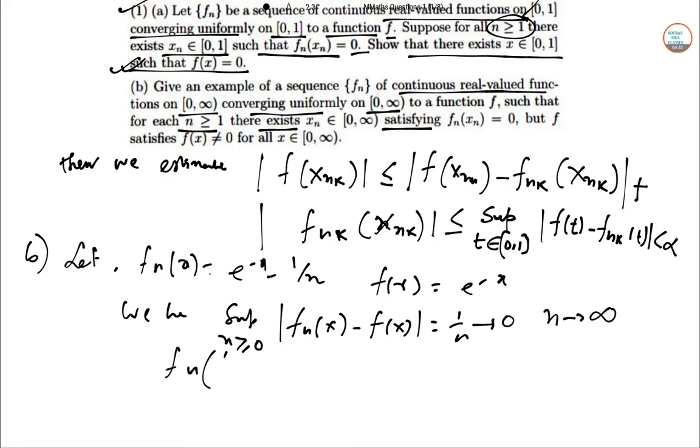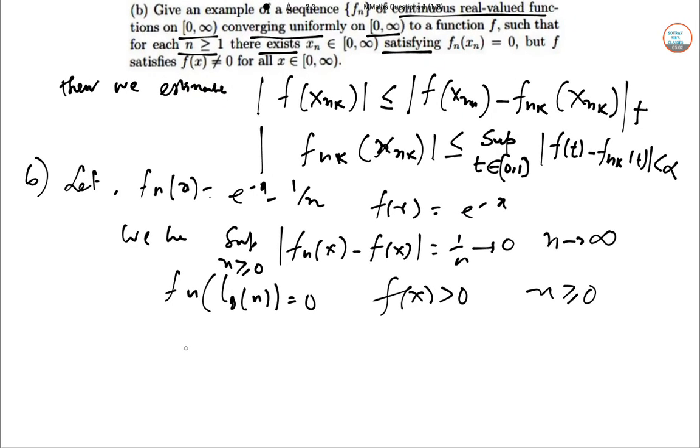Again F of N log of N equal to 0 but however, Fx greater than 0 is done for all values of X which is non-negative. So it follows that mod Fx is equal to limit K tends to infinity F of X of N of K less than equal to epsilon.